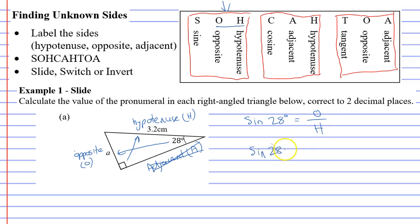O and H both have an attributed letter or number. For example, opposite is A, so A goes at the top. And hypotenuse is 3.2, so 3.2 goes at the bottom.